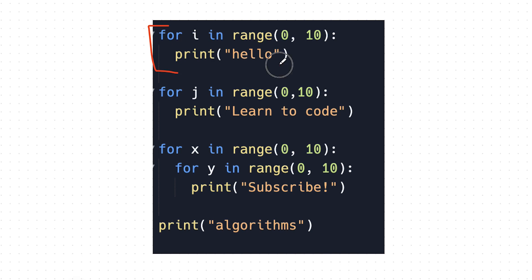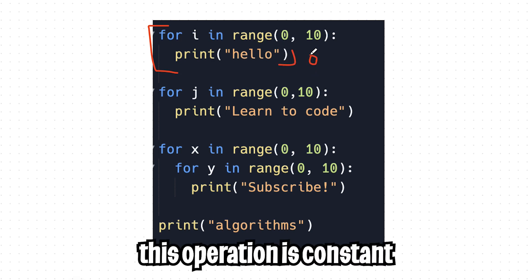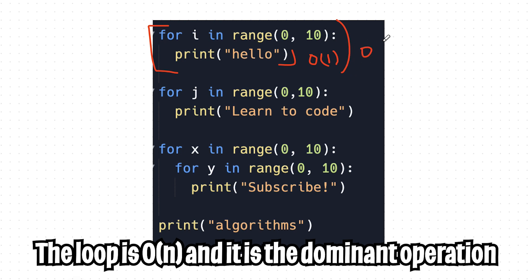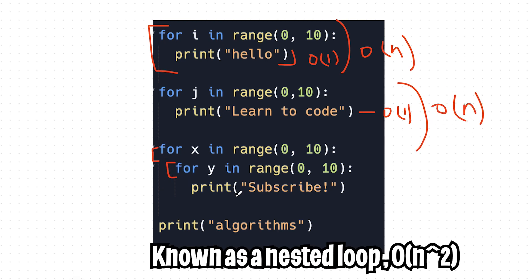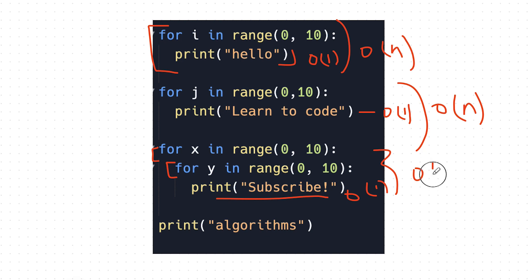First off, we see a loop, and inside it there's a print statement which is O of 1, and together this is all O of N. And this print statement is O of 1. And this whole loop is O of N. And here we have a loop inside another loop, and it just does a print statement which is O of 1. So in total here we have O of N squared.